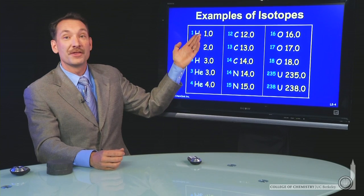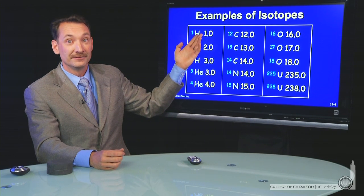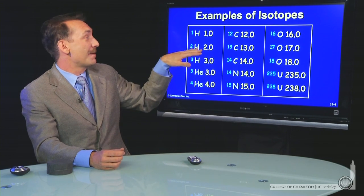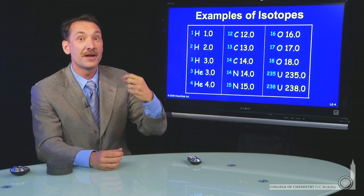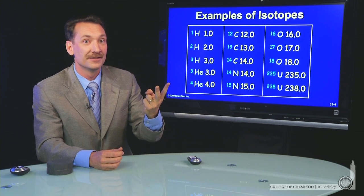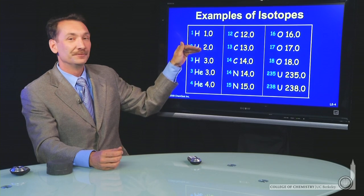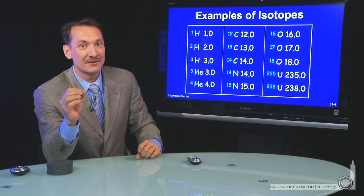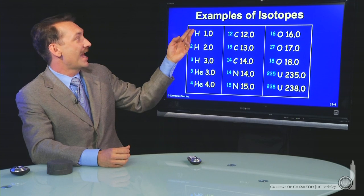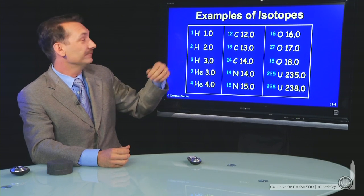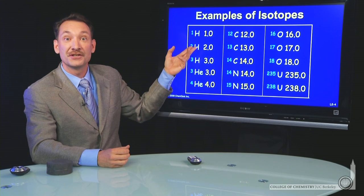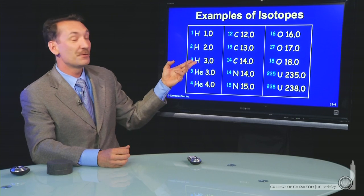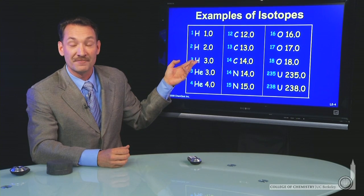Hydrogen with a single neutron would have a mass of two. One proton and one neutron in the nucleus makes a mass of two. Any element that has one proton in its nucleus is hydrogen. But I can have hydrogen with a single proton, I can have hydrogen with an additional neutron, or hydrogen with two additional neutrons of mass three.